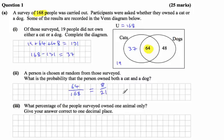Part 3 says what percentage of the people surveyed owned one animal only? Give your answer correct to one decimal place. Okay, well the people who own one animal only, that would be the people who owned cats only and the people who owned dogs only. So those two. So 37 plus 48.